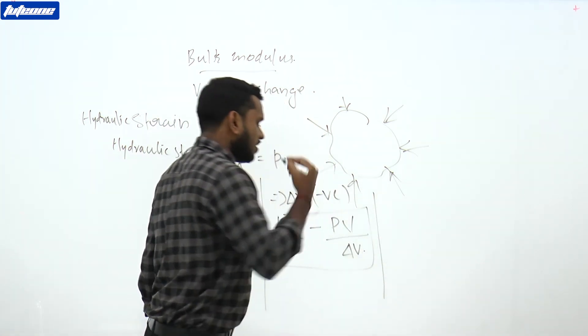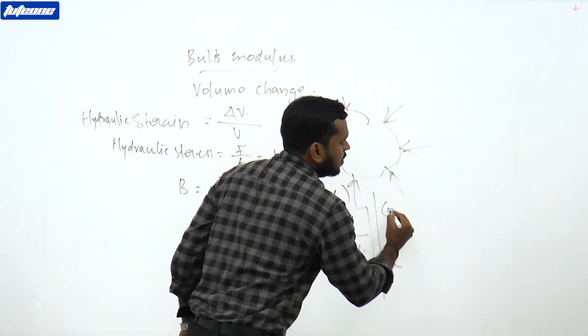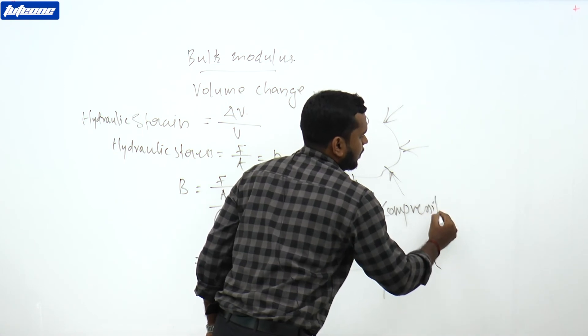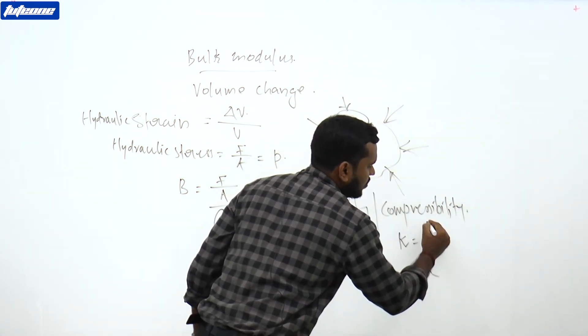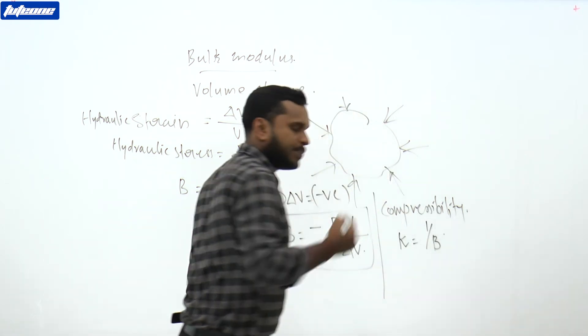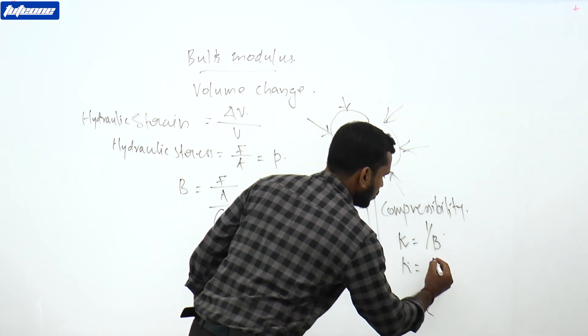We can define a quantity that is the reciprocal of bulk modulus, which is known as compressibility. Compressibility k is equal to 1/B, so from this equation k equals delta V divided by PV.